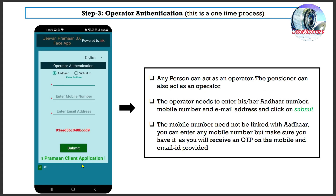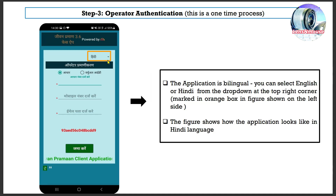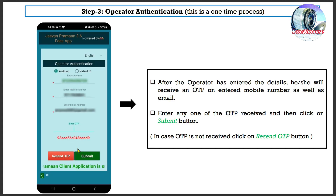Any person can act as an operator; the pensioner can also act as an operator. The operator needs to enter his Aadar number, mobile number, and email address and click on Submit. The mobile number need not be linked with Aadar — you can enter any mobile number, but make sure you have access to it as you will receive an OTP on the mobile and email ID provided. Step 3: Operator Authentication — this is a one-time process. The application is bilingual; you can select English or Hindi from the drop-down at the top right corner. After the operator enters details, enter any one OTP received on mobile or email and click Submit.